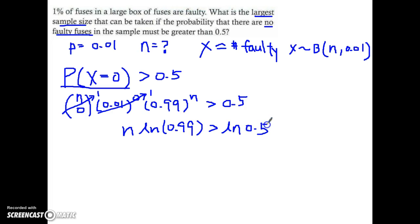Now be careful with this. If you put this in your calculator, you can see that my ln of 0.99 is actually a negative value. So when I divide that to both sides, my inequality sign has to be flipped.